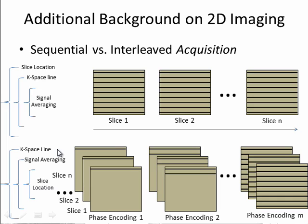For interleaved acquisition, we have a different ordering of the acquisition loops. The first phase encoding line could be up here or down here. It would be acquired — first slice location, inner loop. Then we would go to the next slice, gather that phase encoding line, go to the next slice, gather that phase encoding line, then go to another slice location. Then we go to the next phase encoding, and we go to the next slice, doing any averaging on that line that we might need.